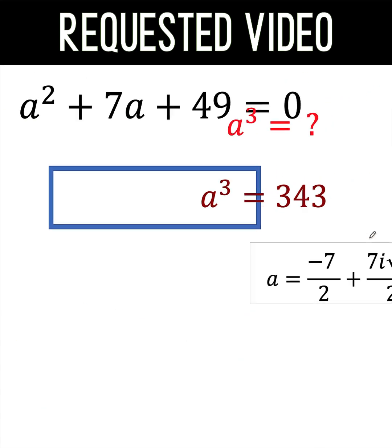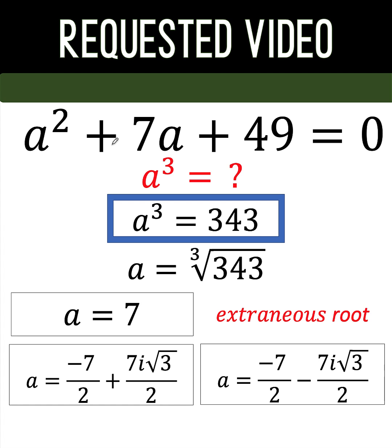And so to summarize now what we found out, given a squared plus 7a plus 49 equals 0, the value of a cube is indeed 343, but the value of a are negative 7 over 2 plus 7i times square root of 3 over 2 and negative 7 over 2 minus 7i times square root of 3 over 2. a equals 7 is the extra root of the cube root of 343 because that will not satisfy our given quadratic equation. Thank you very much and we hope to see you again in our next video.